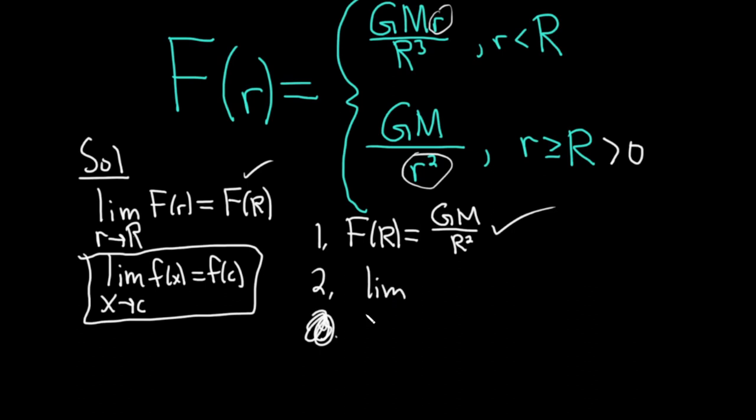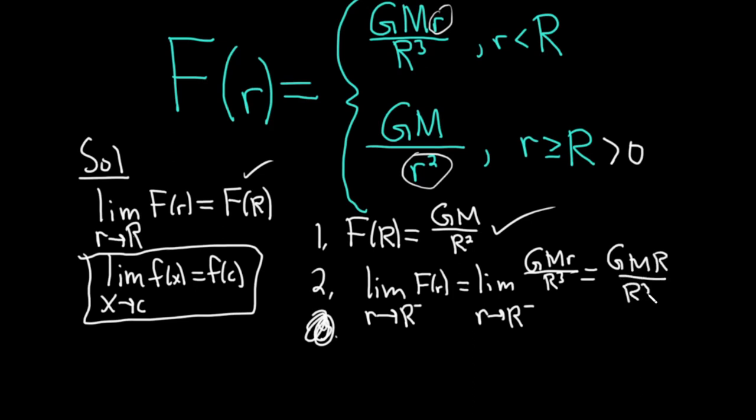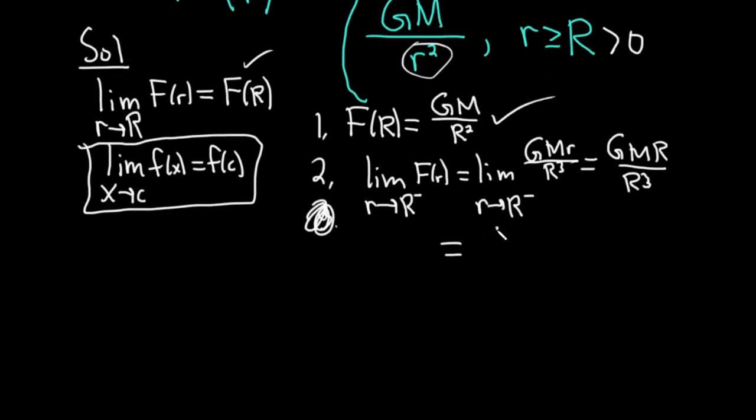The second thing we need to do is make sure the limit exists. So because we have a piecewise function with inequalities like this, we're going to look at one-sided limits. So let's look at the limit as little r approaches big R from the left. So because we're approaching from the left, that means that little r is smaller than big R. So we're going to use the top piece here. So this is the limit as little r approaches big R from the left of gm little r over big R cubed, just like that, okay? Because we're approaching from the left. So if you plug in big R here, there's no issues. You just get gm big R over big R cubed, and we end up with gm over big R squared, which was big F of R. So it's looking really good, right?